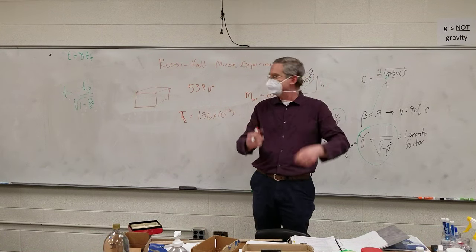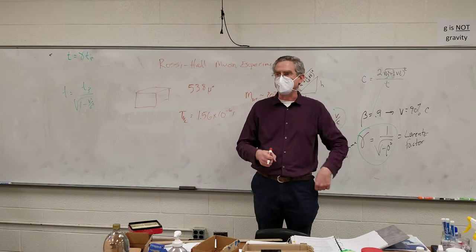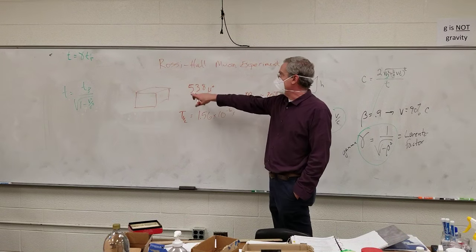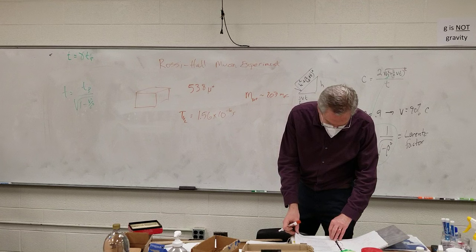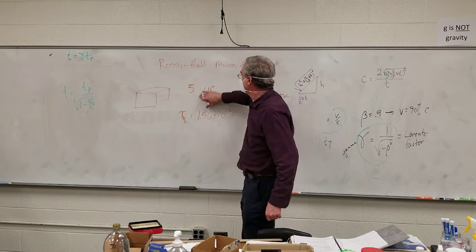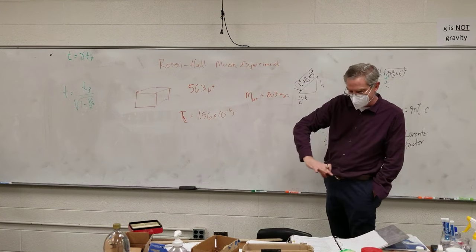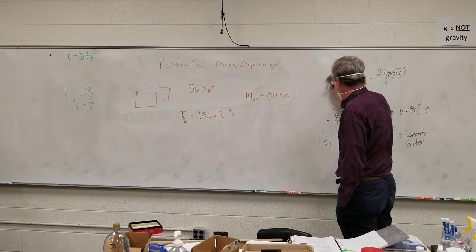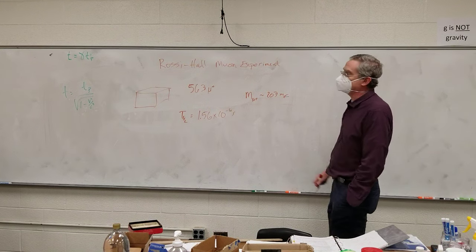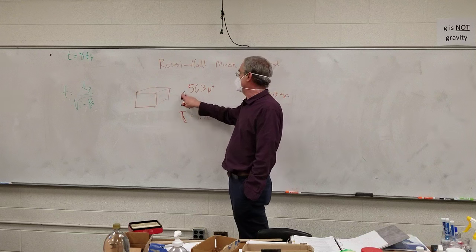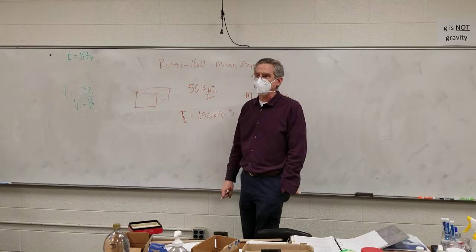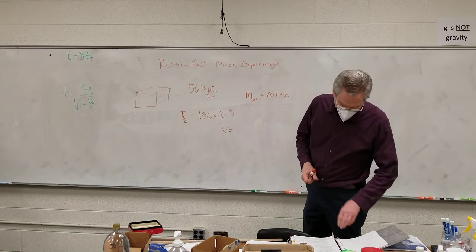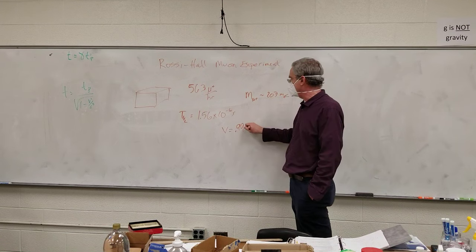So they counted the number that came through, and I'll correct that number right there: 563. At the top. Then they went down to the bottom of the mountain and they did the exact same experiment and counted the number down there. So let's predict how many should be counted at the bottom. And you get two very clearly different results assuming special relativity is true and assuming it's not true. So this is the number count at the top. This is per hour, by the way.